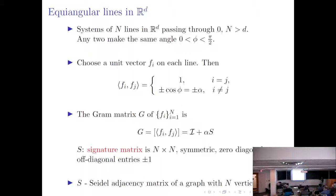Just as we can go from equiangular lines to signature matrices, there is also a converse: for any matrix with these properties, we can connect it back to a system of equiangular lines. It's worth observing that the Gram matrix, when you have more lines than the dimension, will always have a minimum eigenvalue of 0, and the non-zero eigenvalues will be positive. So the minimum eigenvalue of the signature matrix is going to be negative 1 over alpha.